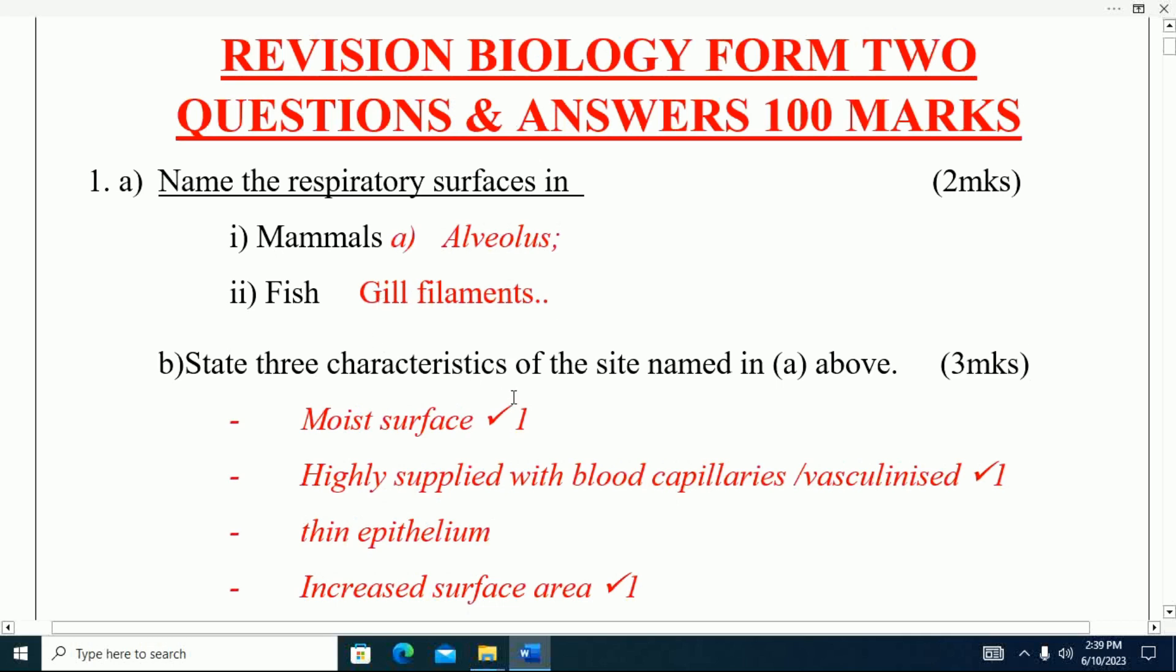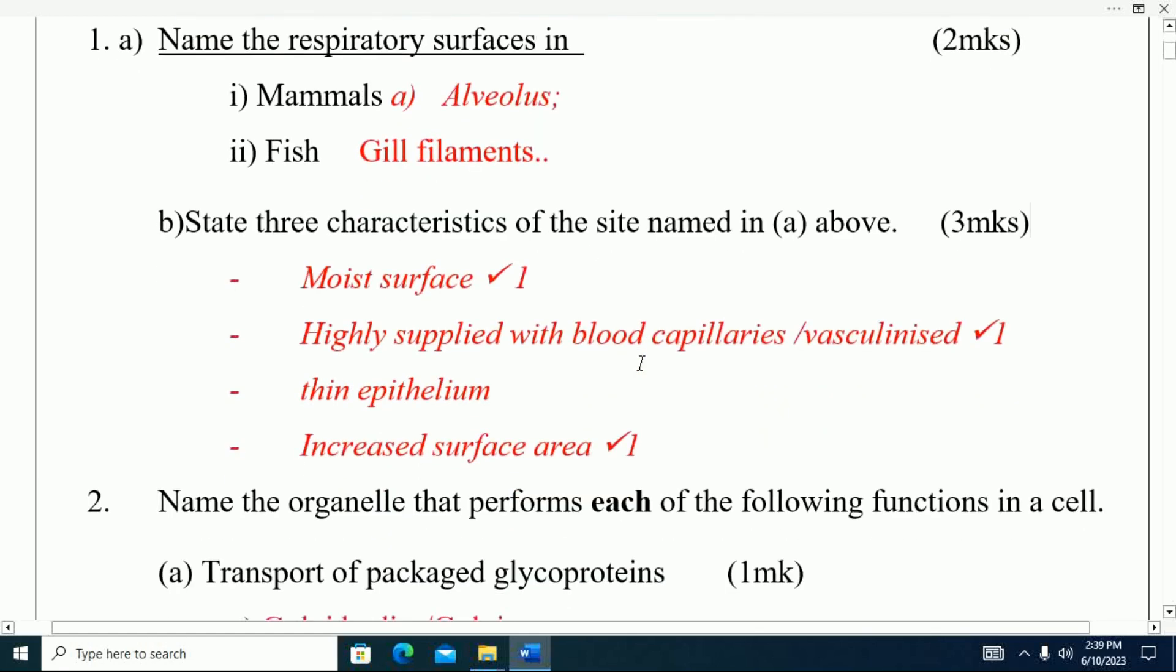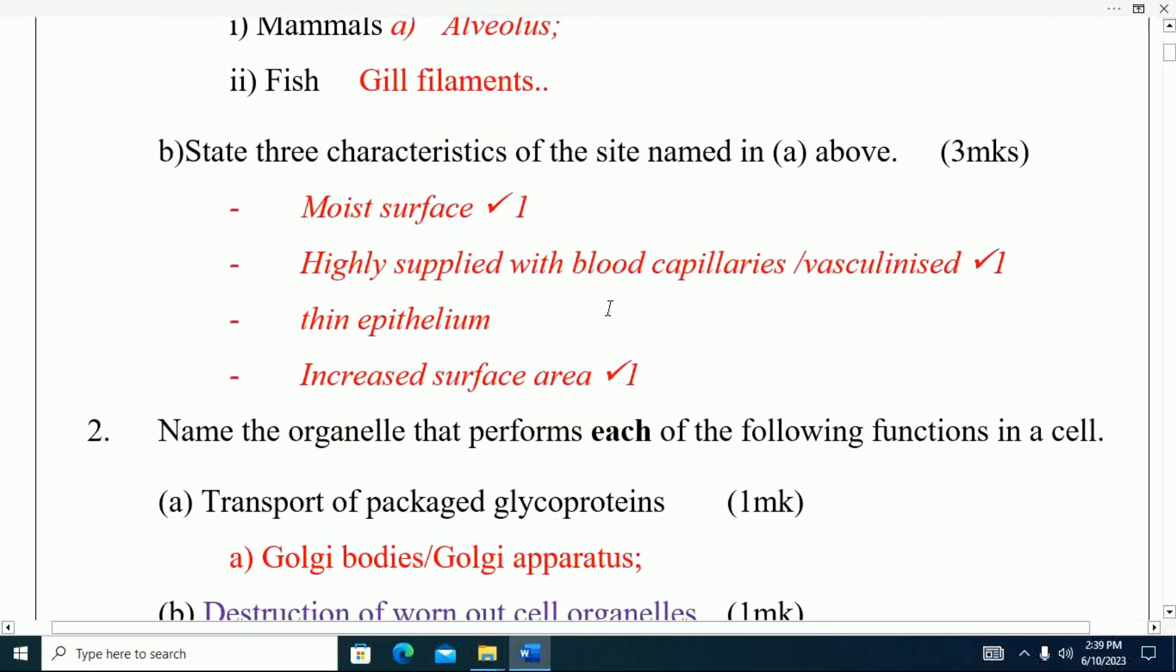Part B: What are the characteristics of the site named in A above? What are the characteristics of alveoli? Number one: they have moist surface. Number two: highly supplied with blood capillaries, that is highly vascularized. Number three: they have thin epithelium. Number four: they have increased surface area.